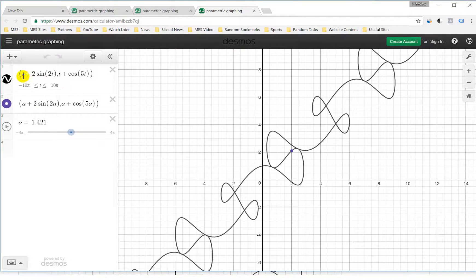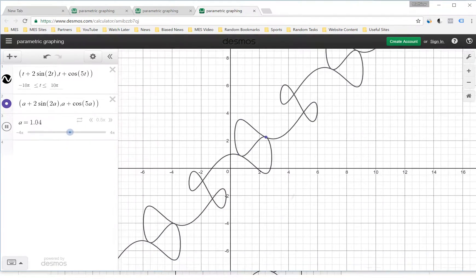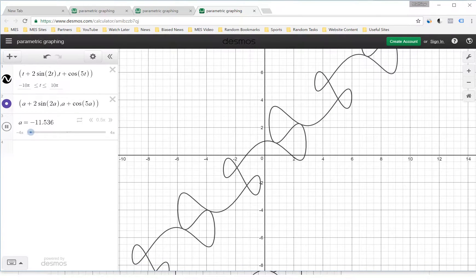Here's a cool equation. X is equal to t plus 2 sine 2t, and y is t plus cosine 5t. I wrote the same thing with a just so we can change the value. Notice how it changes, which is quite amazing. I've made it from negative 4 pi to 4 pi. This is absolutely amazing. These are really cool graphs.